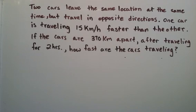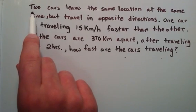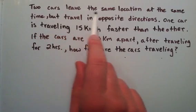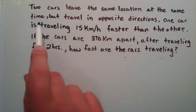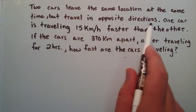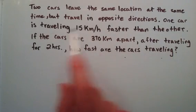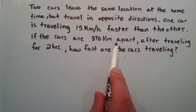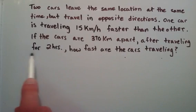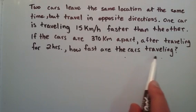In this tutorial I'm going to be doing another problem on uniform motion. Two cars leave the same location at the same time, but travel in opposite directions. One car is traveling 15 kilometers per hour faster than the other. If the cars are 370 kilometers apart after traveling for two hours, how fast are the cars traveling?